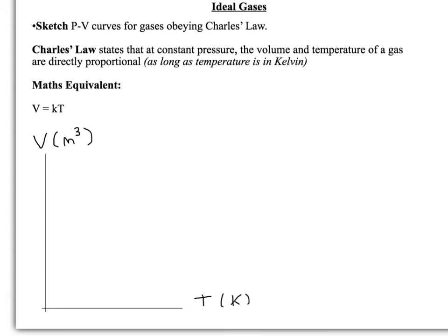If we put volume against temperature, remembering the temperature we're using is the Kelvin scale, we will get a graph that looks like this. Because it's directly proportional, it must go through the origin, which is why we're using the Kelvin scale. This zero point is zero Kelvin. So the gas occupies zero volume when it's at absolute zero.